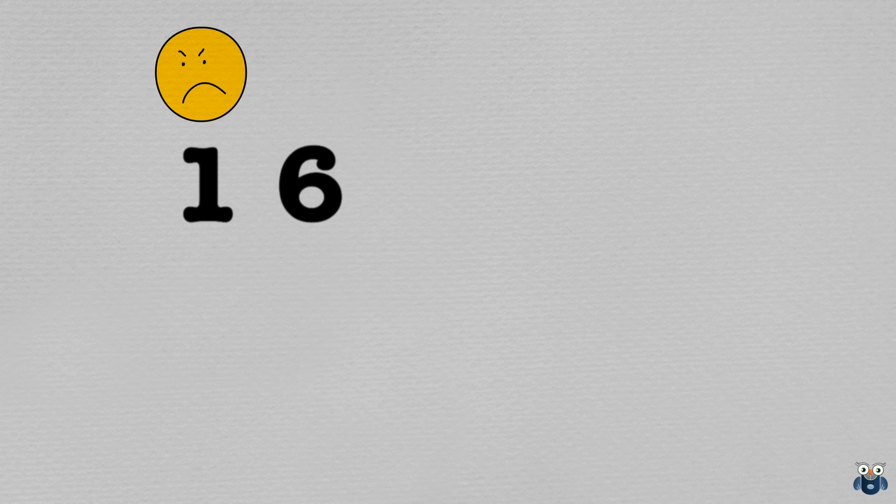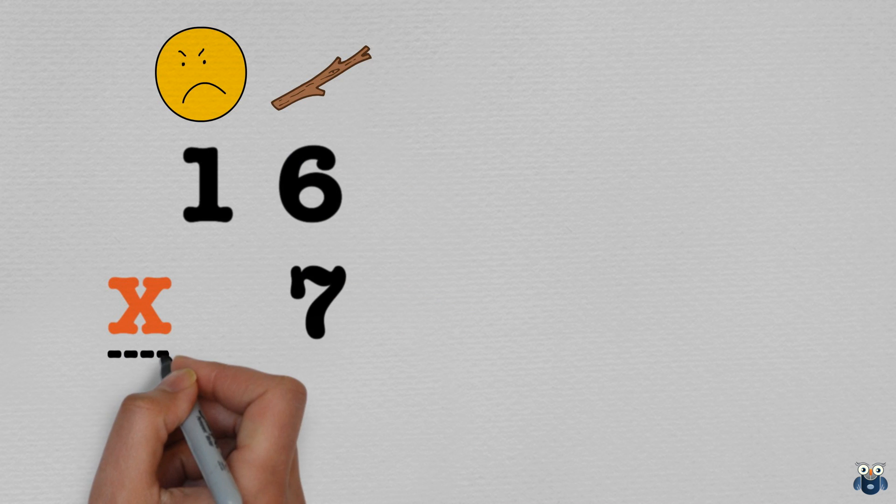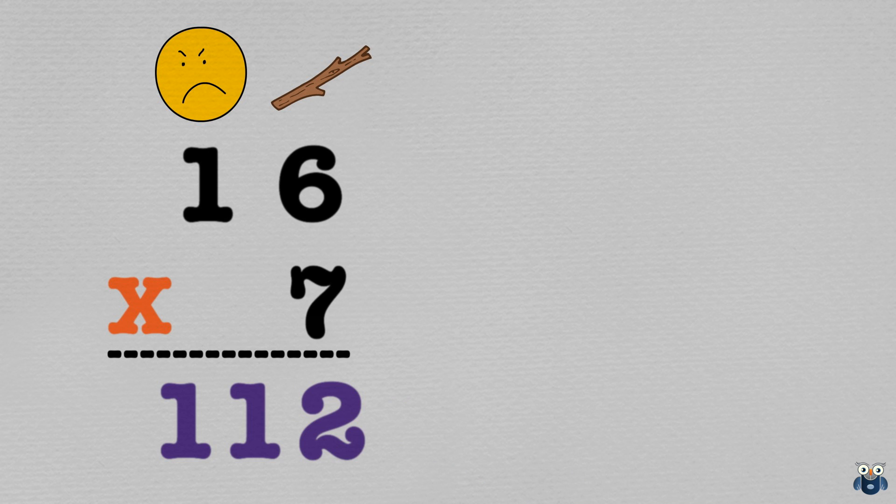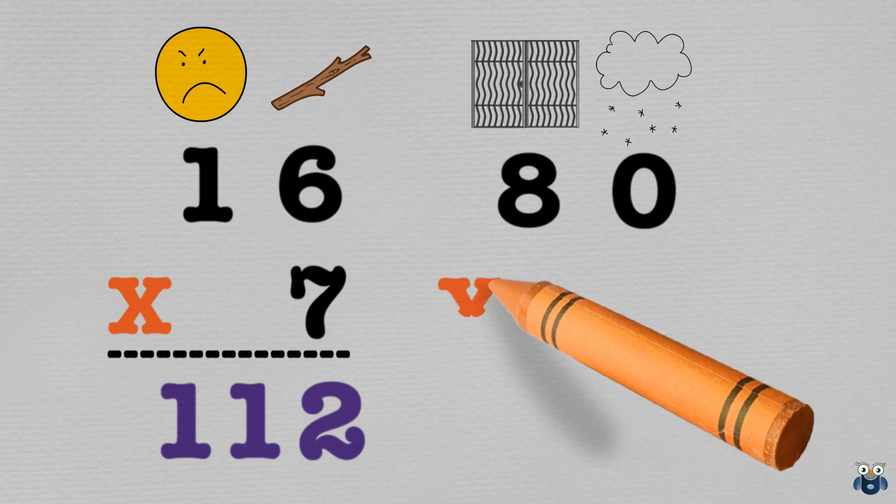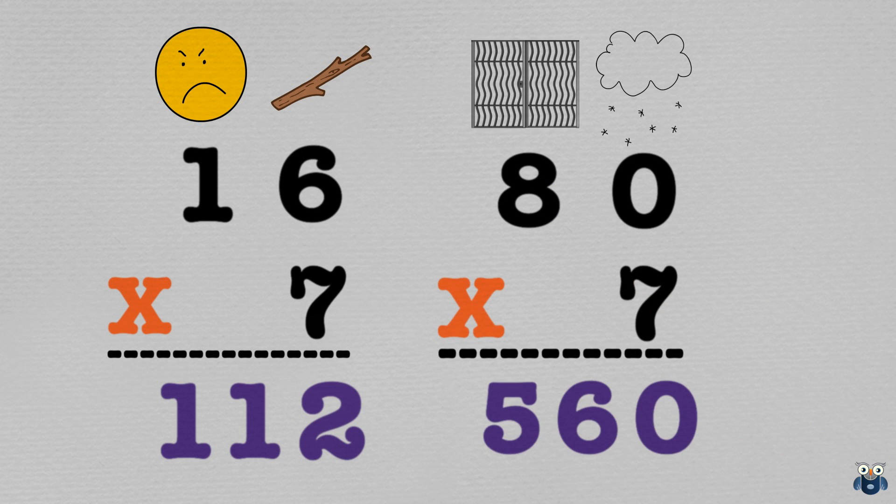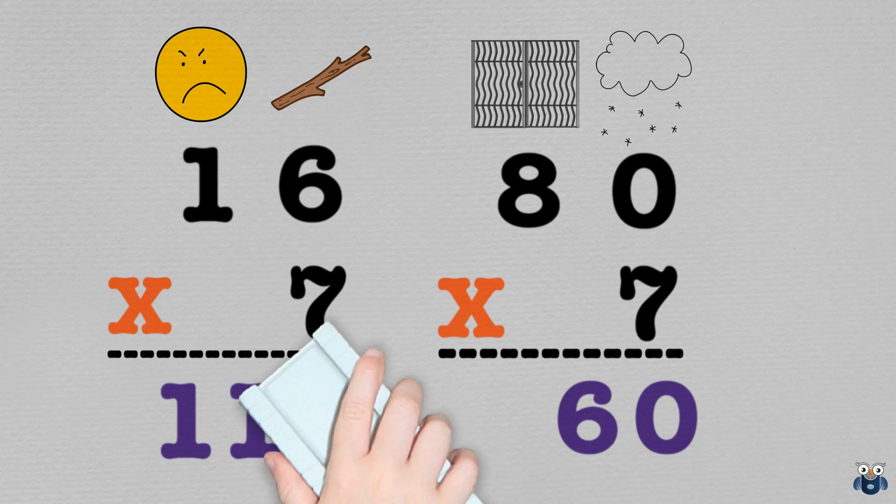Then I could take each part and deal with it separately. So 16 times 7 is 112. And 80 times 7 is 560. And if I take care of the carried over 5, I can get 11760, which is my final answer. Cool, isn't it?